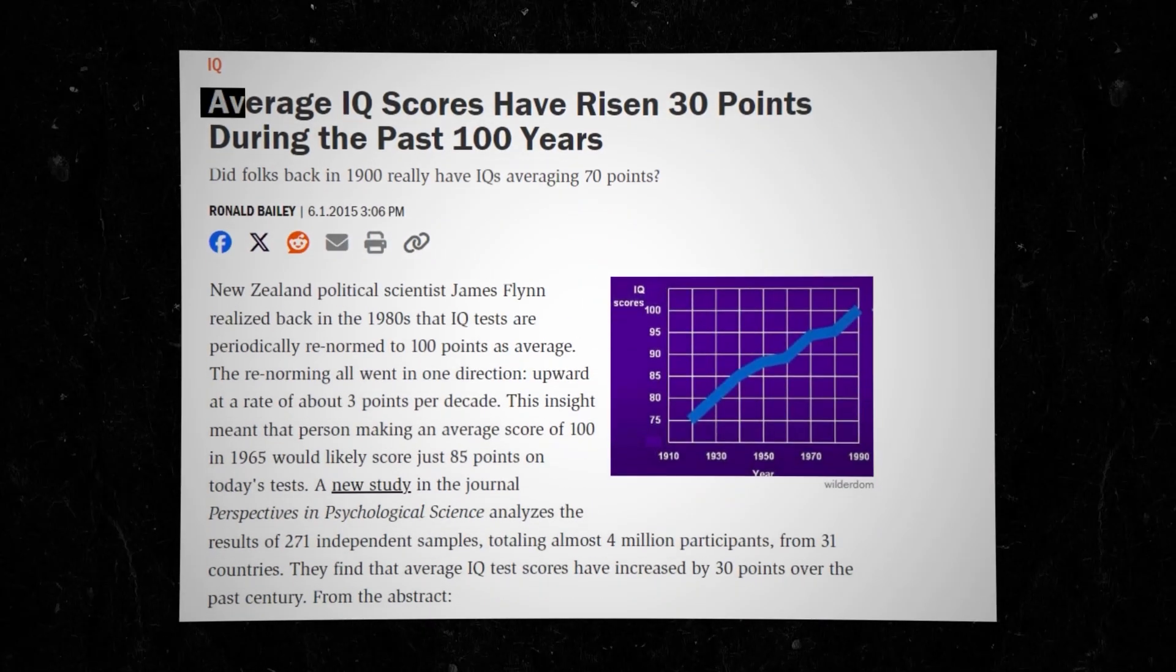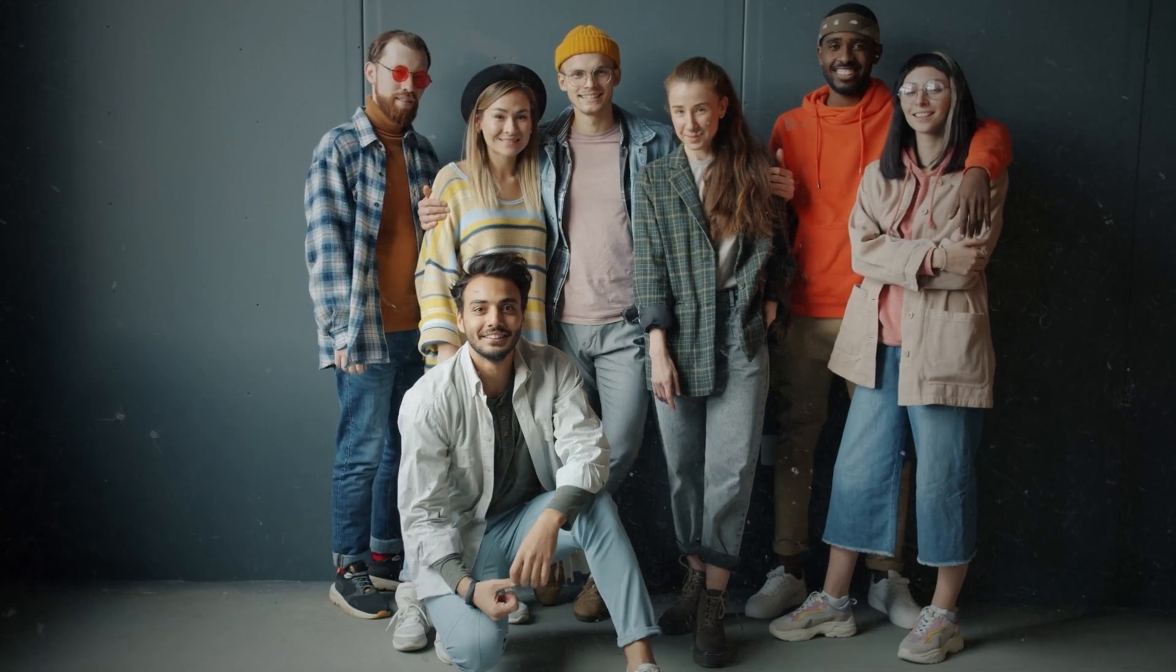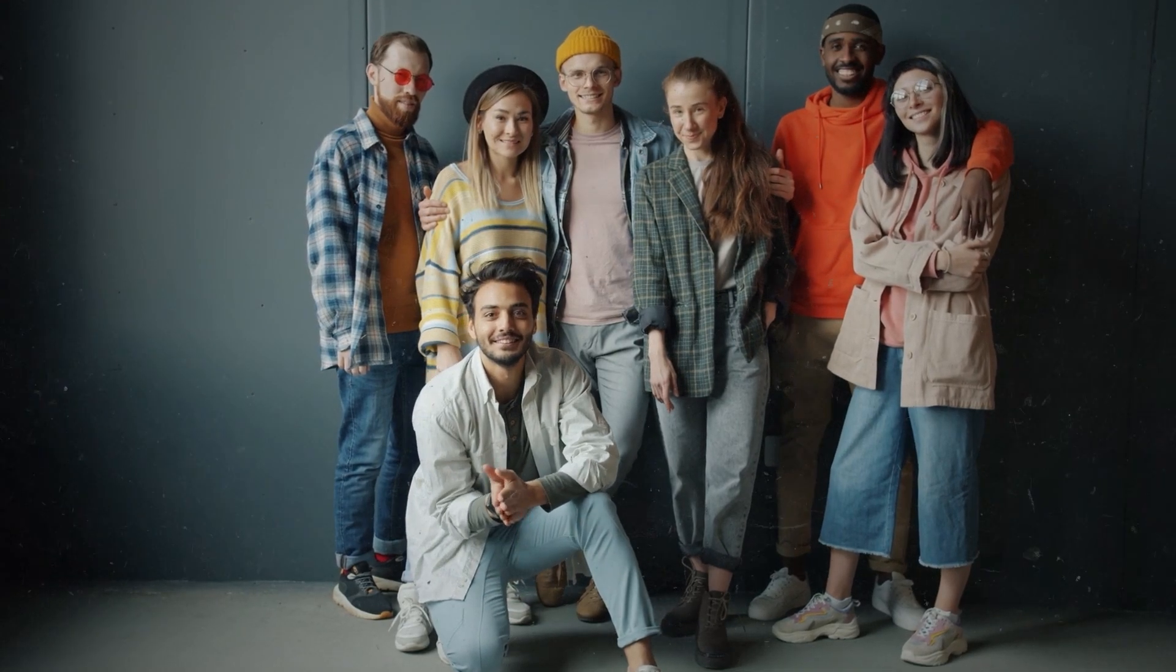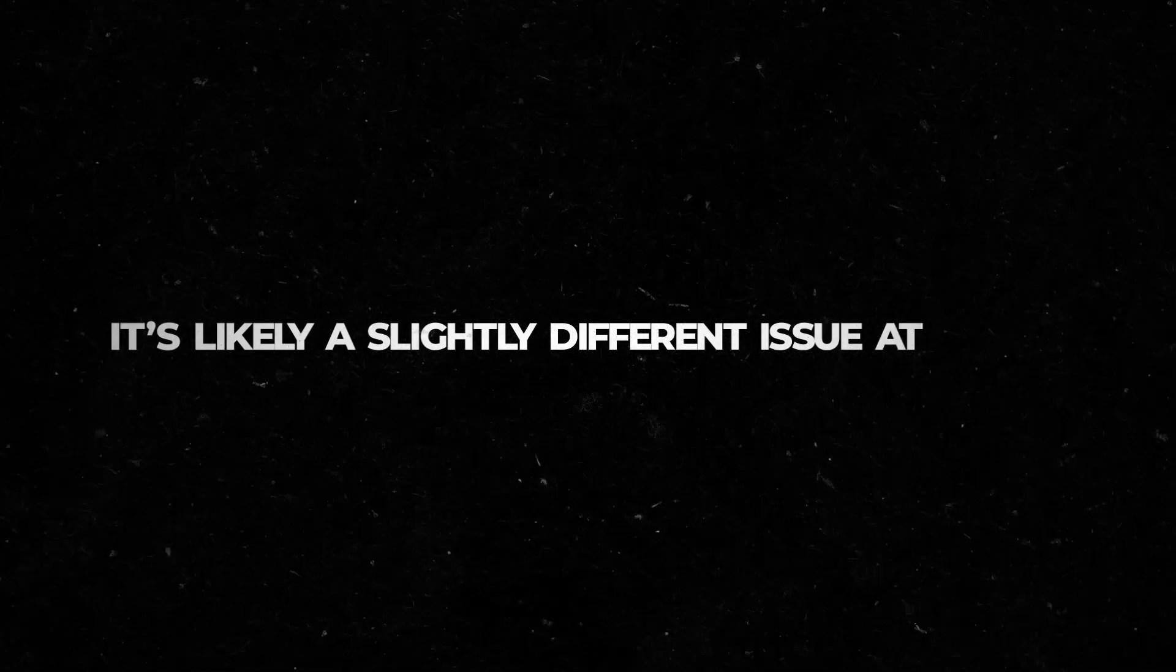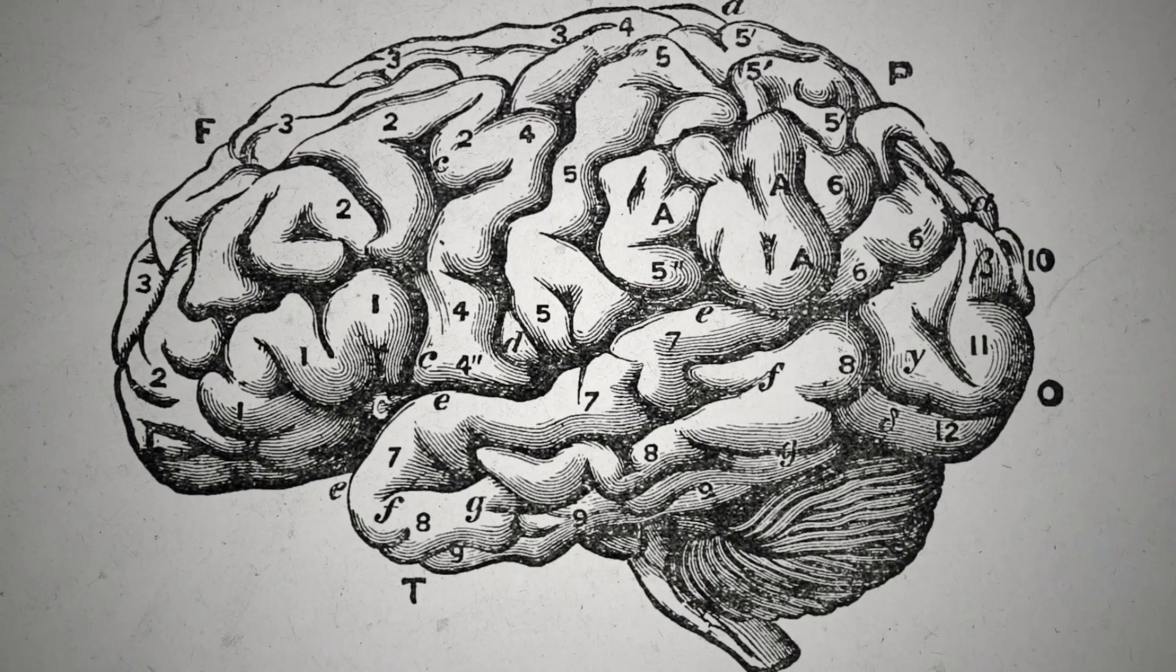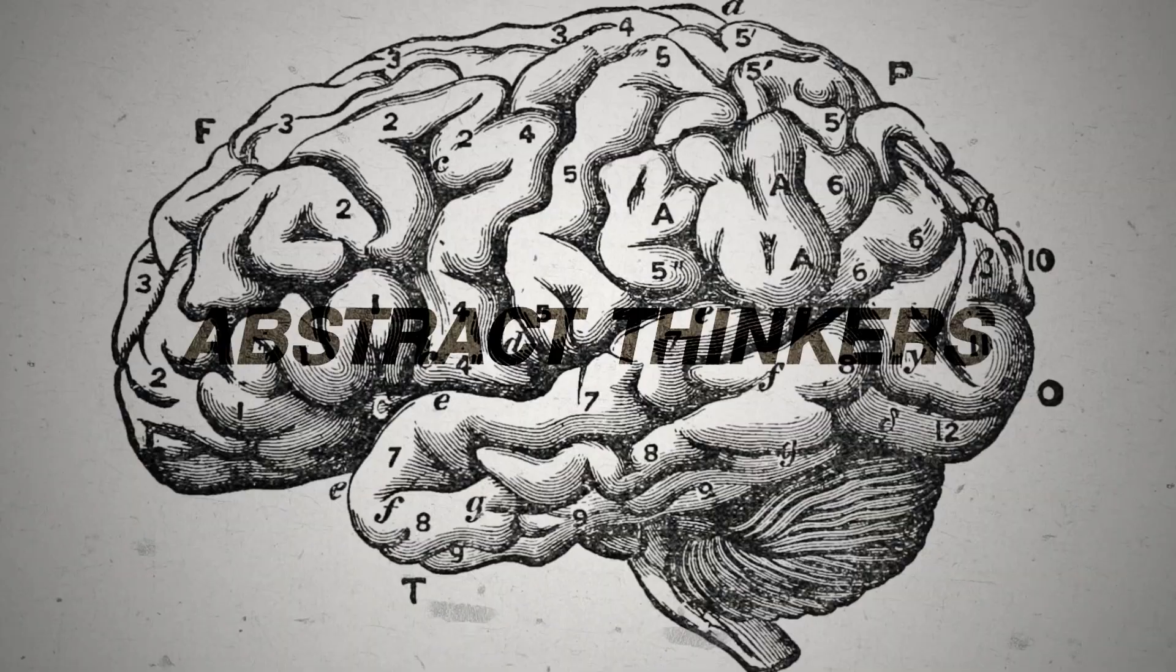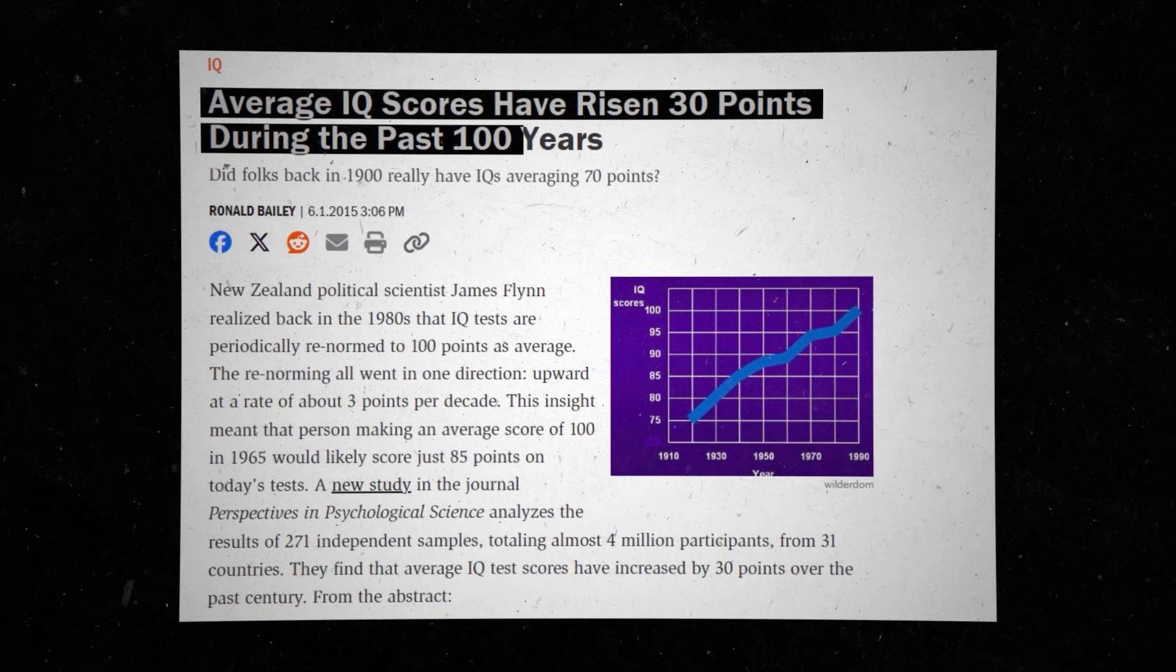It's easy to see how IQ test scores continuously rise over time and conclude that newer generations are simply getting smarter. However, it's likely a slightly different issue at hand. More technology has given us access to more information, and in dealing with this information, more of us have become abstract thinkers and score higher on IQ tests than our ancestors would have. So we're not smarter. We're just merely more accustomed to dealing with the abstract.